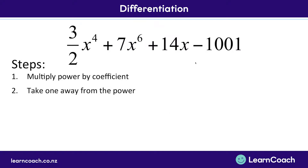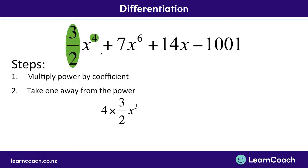Let's look at another example — a slightly bigger expression. We're going to follow the exact same steps. For each individual term, we multiply the power by the coefficient. For the first term, the coefficient is 3 over 2 and the power is 4; multiplying those gives us 4 times 3 over 2, then we take 1 away from the power to leave x to the power of 3. Then 7x to the power of 6 becomes 6 times 7, giving x to the power of 5.